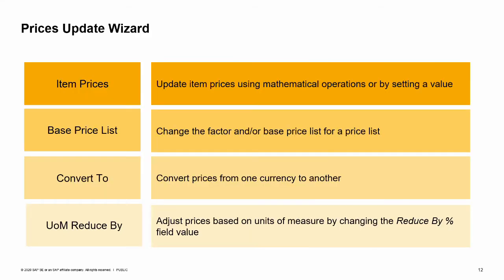When one or more price lists need more extensive updates, a better practice is to use the prices update wizard. The prices update wizard is very flexible and will allow you to change selected items on one or more price lists by four methods: the item prices method to update items' prices using a mathematical operation or by setting a value; the base price list method to change the factor and/or base price list for one or more price lists; the convert to method to convert prices from one currency to another; and the UOM reduce by percentage method to make a mass adjustment to prices based on a unit of measure.